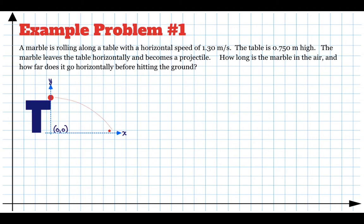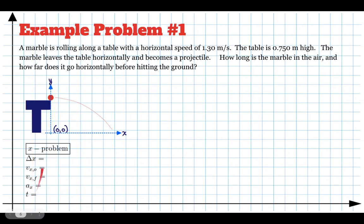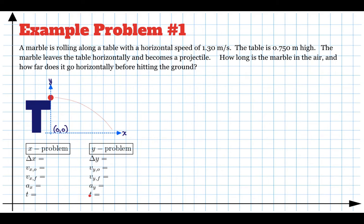For these problems we have an x and a y axis, and I'm going to draw a coordinate system on the diagram, calling the launch point the origin — where x is 0 and y is 0. Our variable list has five variables in the x direction: the distance it goes, initial velocity, final velocity, acceleration in x, and time. We also have those same five variables in the y direction — distance traveled vertically, initial vertical velocity, final vertical velocity, vertical acceleration, and time — using subscripts to distinguish x from y.